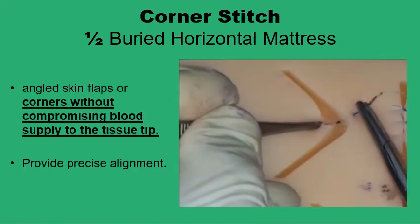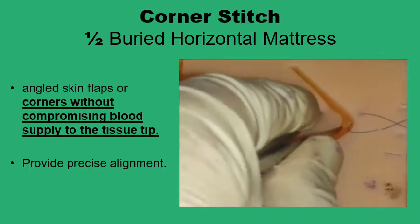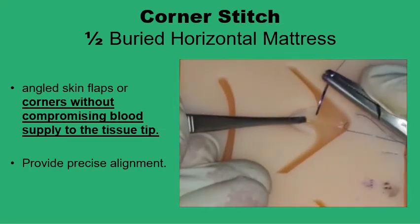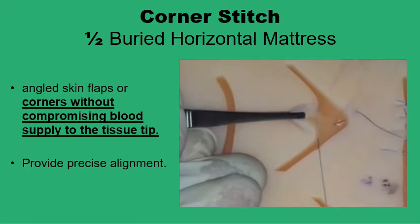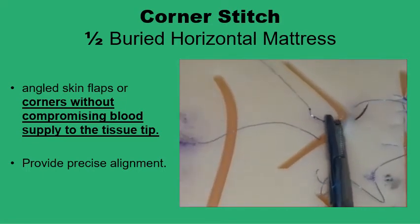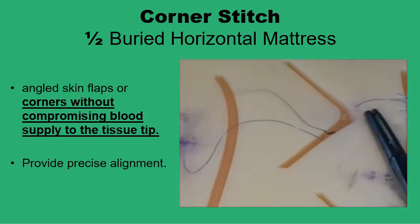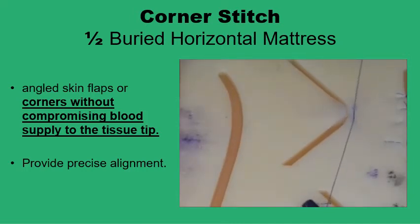In the corner stitch, you pass the suture through the skin on the wider side. On the angled side, you avoid placing it on the skin surface — instead, you pass through the deep dermis four to six millimeters from the tip. You then bring it back to the wider side where you tie the knot, completing the half-buried horizontal mattress suture. This avoids compromising blood supply to the tip and places it precisely to fit against the concave angled portion of skin on the other side.